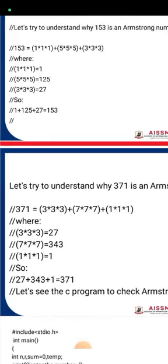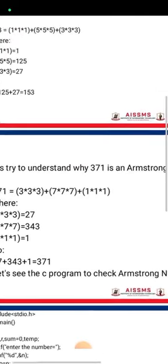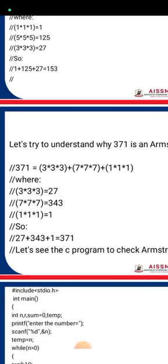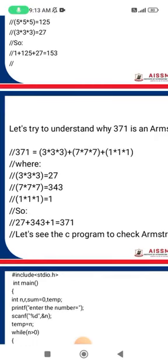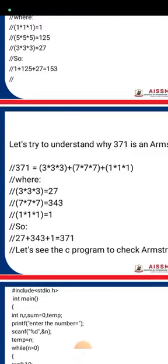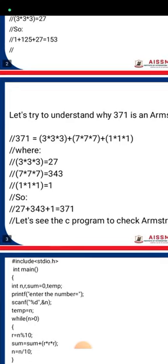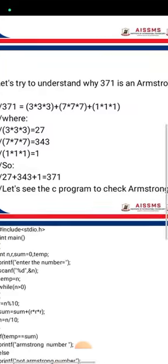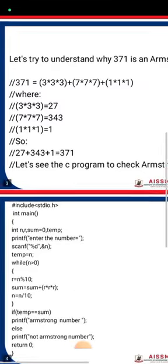Let's verify another example: 371. We calculate 3×3×3 + 7×7×7 + 1×1×1 = 27 + 343 + 1 = 371. Since the result equals 371, this confirms that 371 is also an Armstrong number. Now let's see the C program to check for Armstrong numbers.